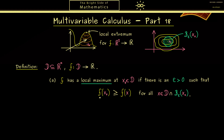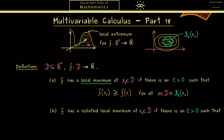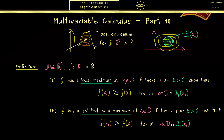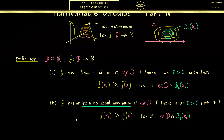You should note that we don't have a strict inequality here, so a constant function would also have local maxima. If you want to exclude that, we say we have an isolated local maximum — the definition is the same, we just add the word 'isolated' in front. Then we want the strict inequality, which results in only one local maximum in this neighborhood. This definition is more restrictive and corresponds to our picture. Both definitions are important depending on what you want to show.